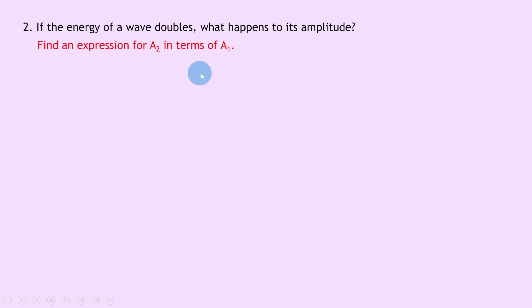So what we want to do here is find an expression for A₂, the final amplitude, in terms of the initial amplitude A₁. Writing down, we know from the question we're trying to find A₂. We know the final energy E₂ is going to be two times the initial energy E₁, and that's because we're told the energy of the wave doubles. And we can just leave the initial amplitude A₁ as A₁.